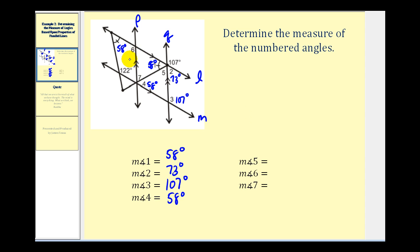Now let's take a look at angle six. Angle six and the angle that measures one hundred seven degrees are alternate exterior angles, where P and Q are the parallel lines and line L is the transversal. So these two angles are congruent, and therefore the measure of angle six is one hundred seven degrees.